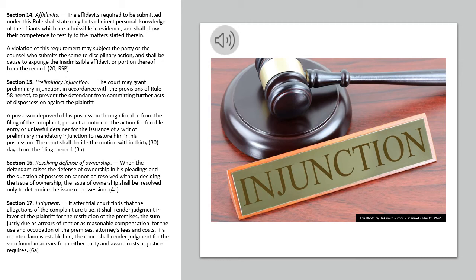Section 15. Preliminary Injunction. The court may grant preliminary injunction, in accordance with the provisions of Rule 58, to prevent the defendant from committing further acts of dispossession against the plaintiff. A possessor deprived of his possession through forcible entry may, from the filing of the complaint, present a motion in the action for forcible entry or unlawful detainer for the issuance of a writ of preliminary mandatory injunction to restore him in his possession. The court shall decide the motion within 30 days from the filing thereof.